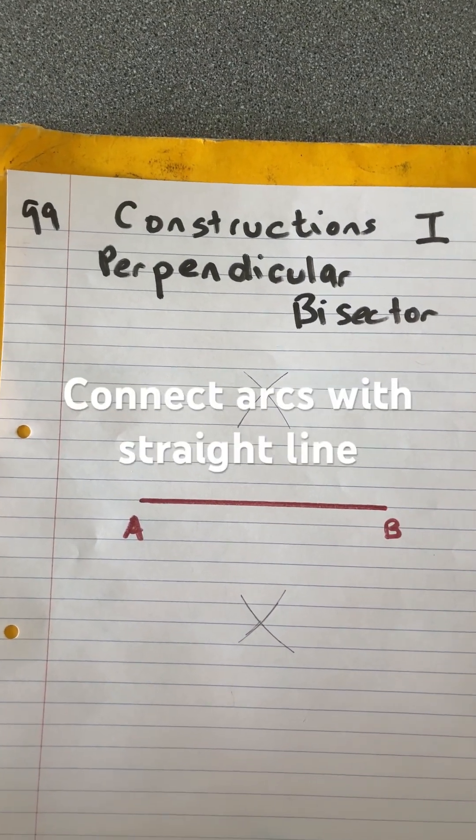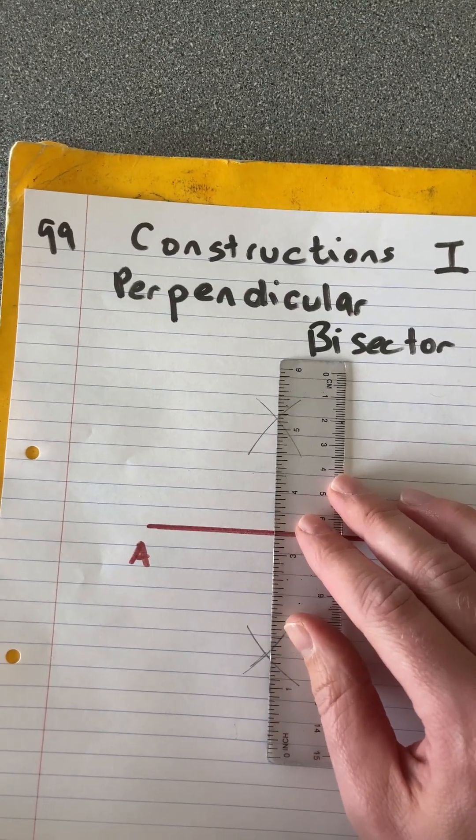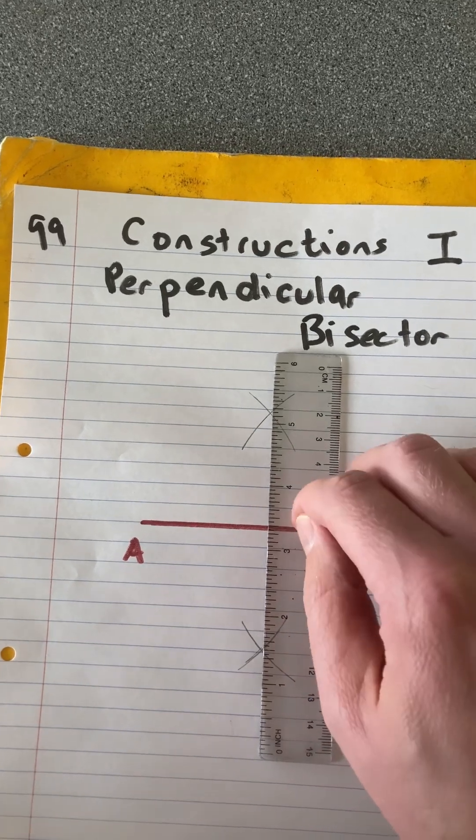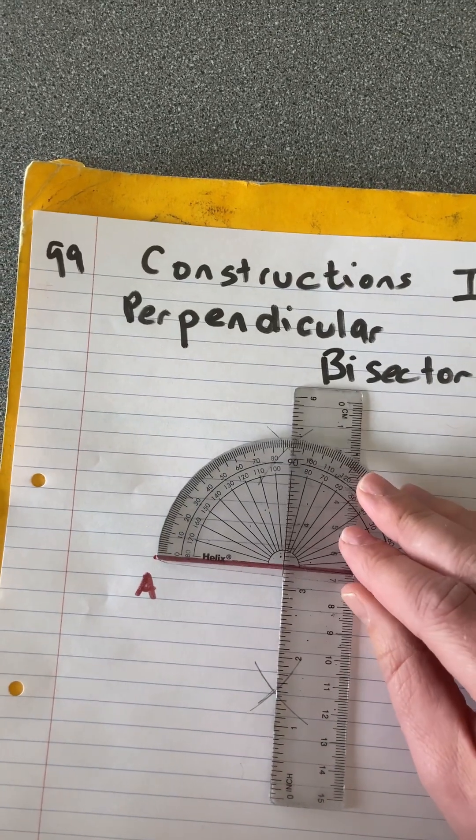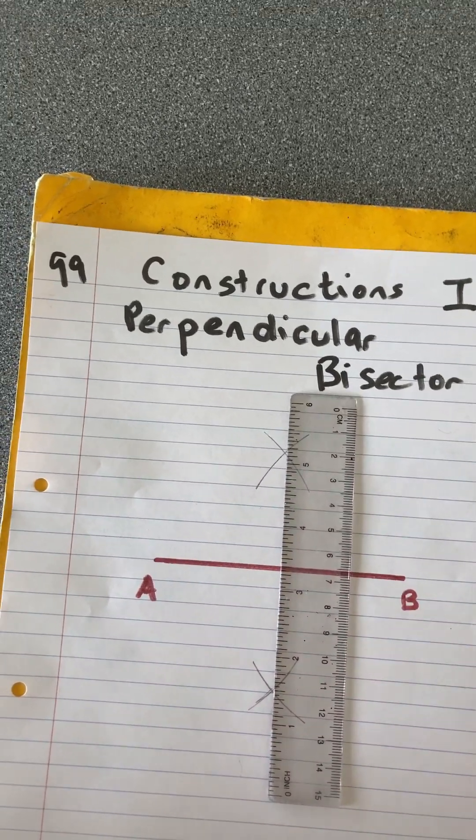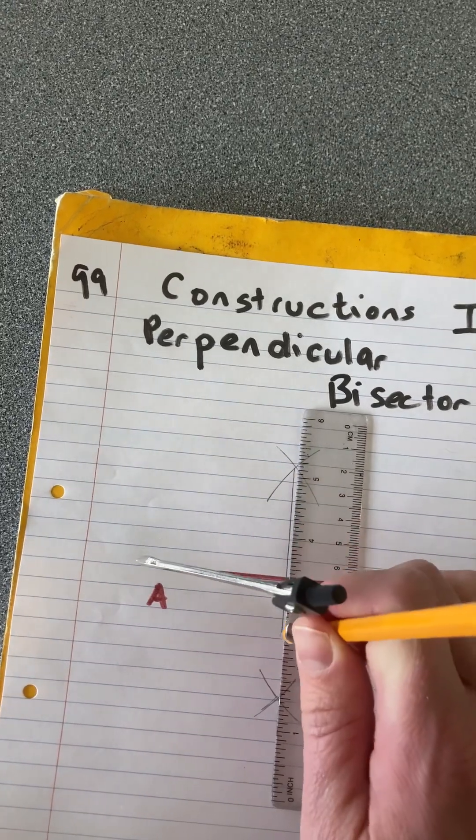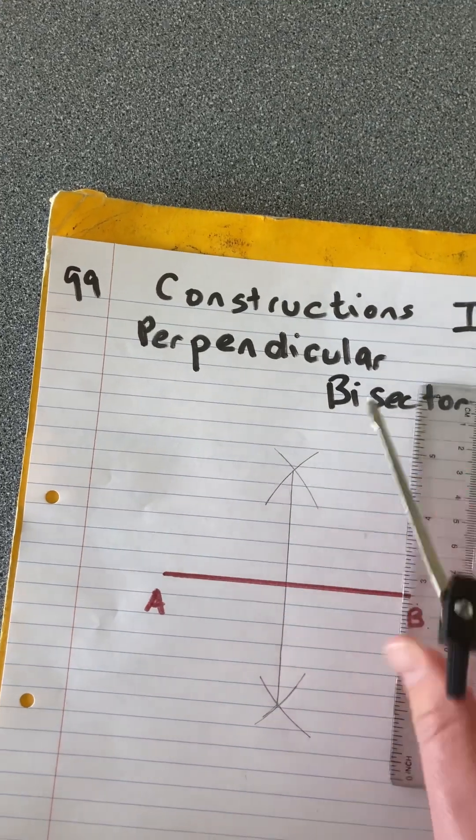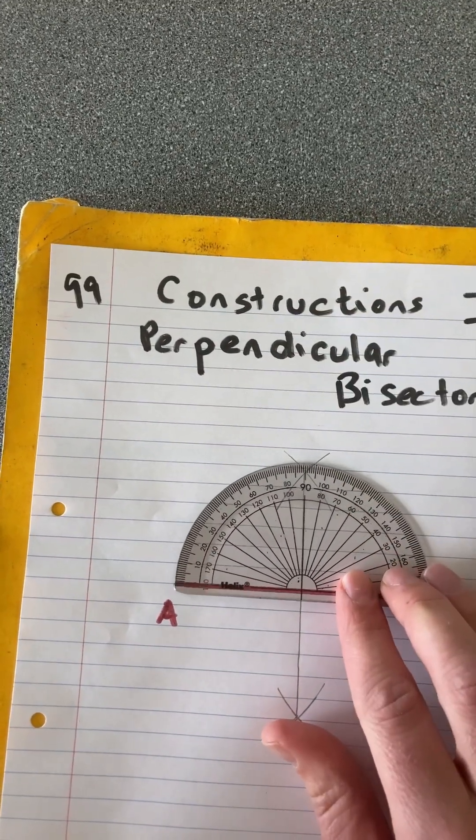And then you're going to take your ruler, and you connect where they cross above and below, going through that line, and that'll be a perpendicular. That'll cross the line at 90 degrees, so it'll be the perpendicular bisector. So just to finish that up, draw a neat straight line through those arcs and show that it is perpendicular.